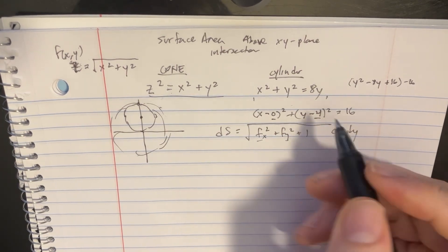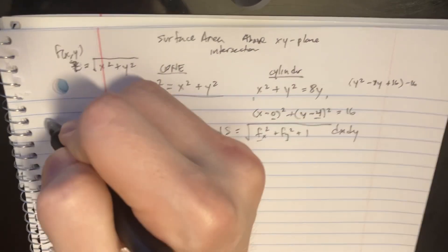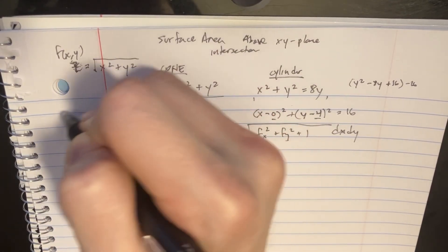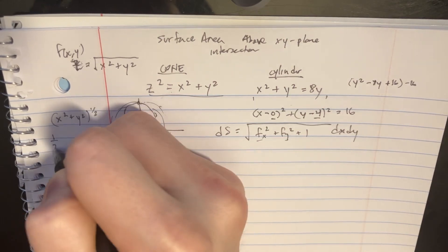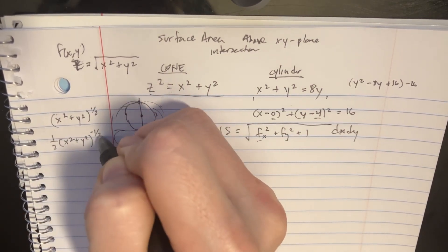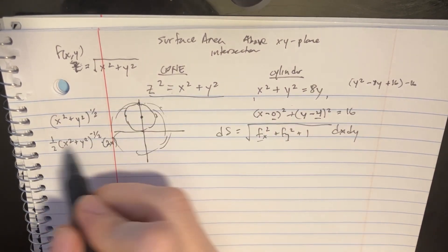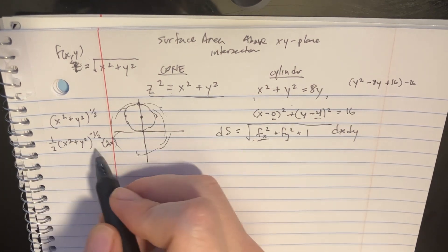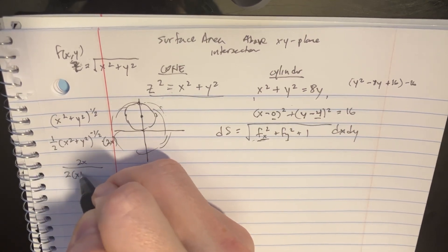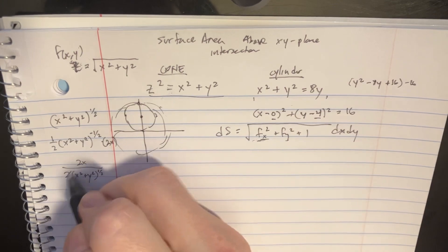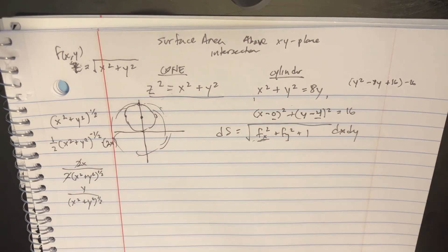Let's take the derivative. We treat it as x squared plus y squared to the one-half, so fx equals one-half times x squared plus y squared to the negative one-half times 2x, which simplifies to x over the square root of x squared plus y squared. The y partial derivative is analogous: fy equals y over the square root of x squared plus y squared.